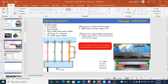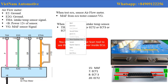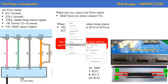Now, I will talk about the function pins of the MAF sensor. For Toyota, the MAF sensor has 5 pins. As you can see: E2 is ground, E2C is ground, and TAS is the intake air temperature sensor signal.